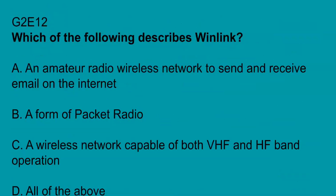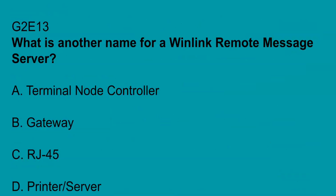G2E12: which of the following describes Winlink? Winlink is all of the above: an amateur radio wireless network to send and receive email on the network, a form of packet radio, and a wireless network capable of both VHF and HF operation. G2E13: what is another name for Winlink remote message server? That's going to be a gateway.